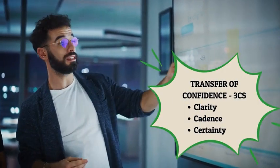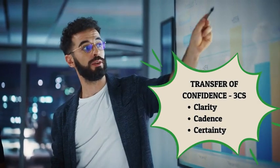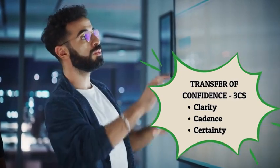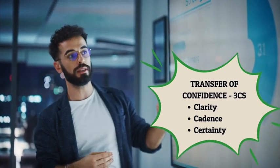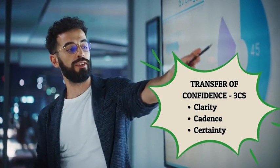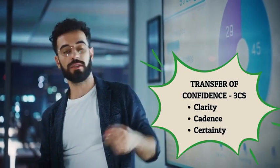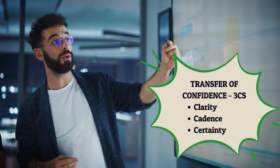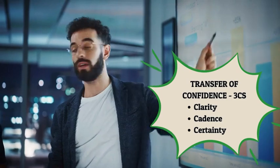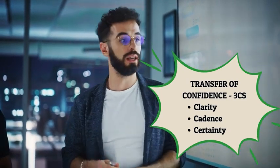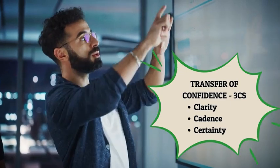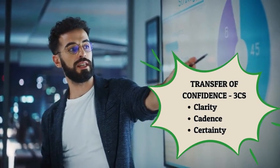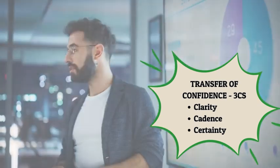Transfer of confidence: you can transfer confidence by using the three C's — clarity, cadence, and certainty. Clarity: be straightforward and easily understood by your client; explain your product or service like you're talking to a fifth grader. Remember, a confused mind never buys. Cadence: deliver your message in a prepared and organized manner — be composed, don't stammer, outline your script and practice out loud several times until you're confident. Certainty: talk to your customer with conviction and belief — eliminate 'I think,' 'maybe,' and 'um' from your vocabulary.